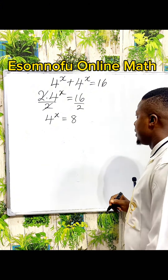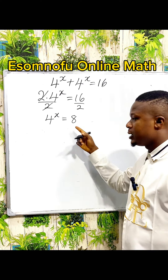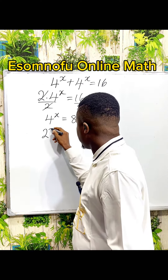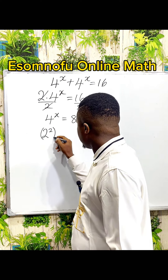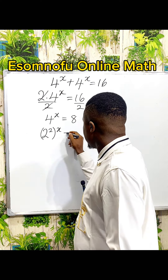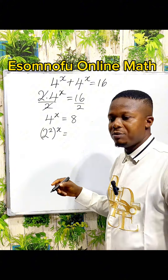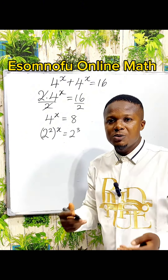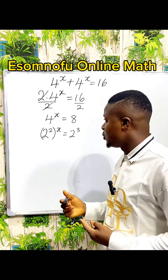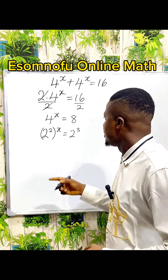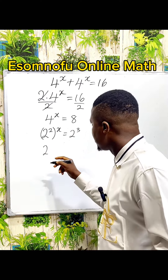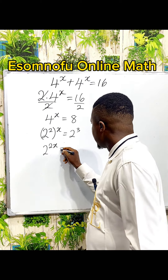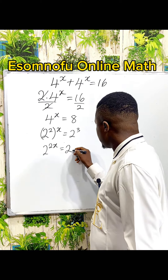Let's simplify further. We have 4 power x equal to 8. So 4 power x can be written as 2 to the power of 2, then you have a power of x, while 8 can be written as 2 to the power of 3 because 2 times 2 times 2 gives 8. So this is 2 to the power of 2x equal to 2 to the power of 3.